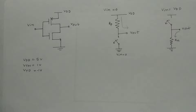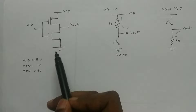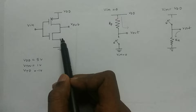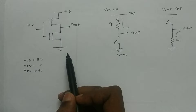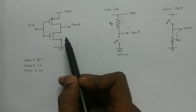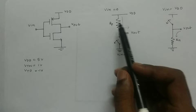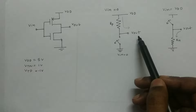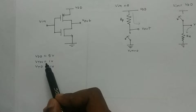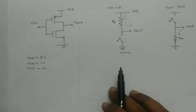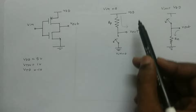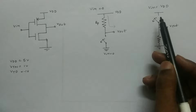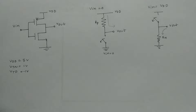Before drawing the transfer function, let's look at how the CMOS inverter works. The inverter has two transistors — PMOS and NMOS — with input VIN and output VOUT. VDD is the power supply and we have ground at the bottom. Basic assumptions: VDD equals five volts, threshold voltage of NMOS equals one volt, and threshold voltage of PMOS equals minus one volt. When VIN equals zero, NMOS is in cutoff (open circuit) and PMOS conducts, so VOUT equals VDD. When VIN equals VDD, PMOS does not conduct and NMOS conducts, so VOUT is directly connected to ground and VOUT equals zero.